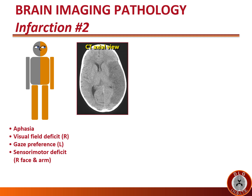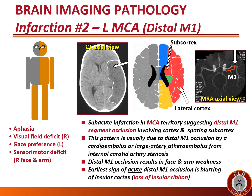This patient presents with aphasia, right visual field deficit, left gaze preference, and sensory-motor deficit involving the right face and arm. The CT scan shows a subacute infarction in the middle cerebral artery (MCA) territory, suggesting a distal M1 segment occlusion because it involves the cortex and spares the subcortex. This pattern is usually due to distal M1 occlusion by a cardioembolus or large artery atheroembolus from internal carotid artery stenosis. Distal M1 occlusion results in face and arm weakness and spares the leg. The earliest sign of acute distal M1 occlusion is blurring of the insular cortex — often called loss of insular ribbon.